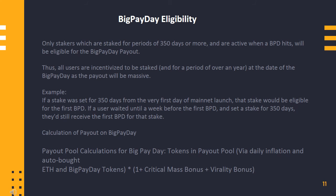Big Payday eligibility: Only stakers who are staked for periods of 350 days or more, and are active when a Big Payday hits, will be eligible for the Big Payday payout. All users are therefore incentivized to be staked for a period of over a year at the date of their Big Payday, as the payout will be massive. For example, if a stake was set for 350 days from the very first day of Mainnet launch, that stake would be eligible for the first Big Payday. If a user waited until a week before the first Big Payday and set a stake for 350 days, they'd still receive the first Big Payday for that stake.